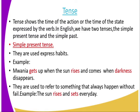The simple present tense is used to express habits. For example: 'Money gets up when the sun rises and comes home when darkness disappears.' That is a habit — Money gets up early when the sun rises and comes back when darkness disappears. The words 'gets,' 'rises,' and 'disappears' are used to express the simple present tense.